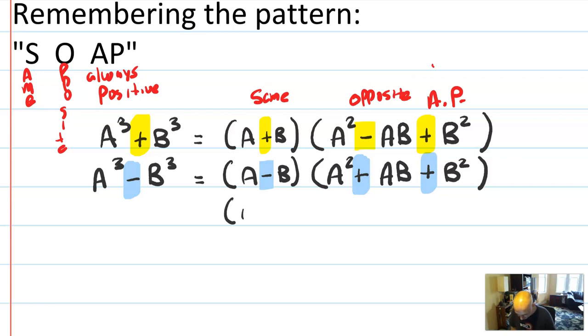So the signs can be remembered with the easy acronym SOAP, S-O-A-P: same, opposite, always positive. And then you just have to remember the form, which is kind of easy, right? It's ab, just like normal factoring. And then you have this thing that's almost a perfect square. That's how I think about it. It's just like an imperfect square because it's missing that middle 2. And so that's how I make this connection, how I remember it. I think it's nice to know. Do you need to know it? No, but it's nice to know.